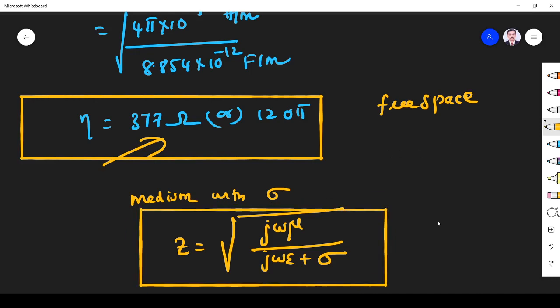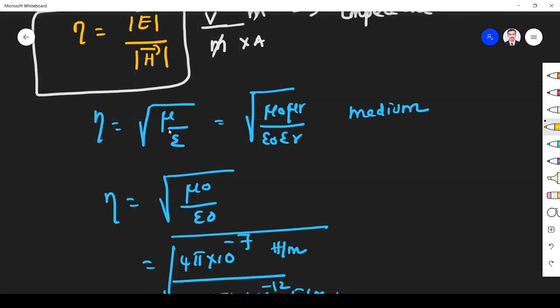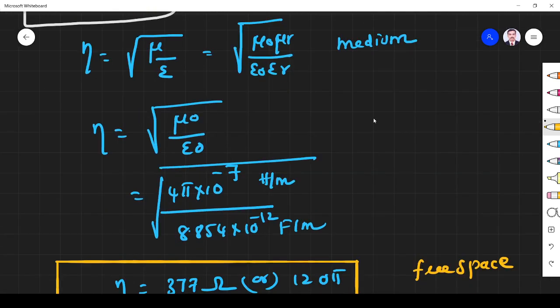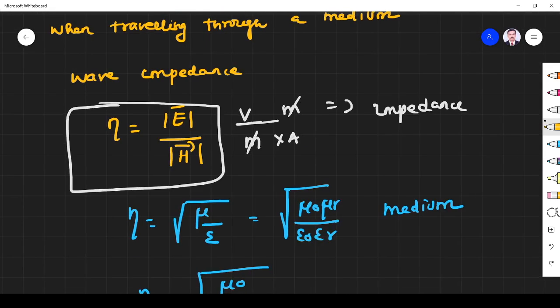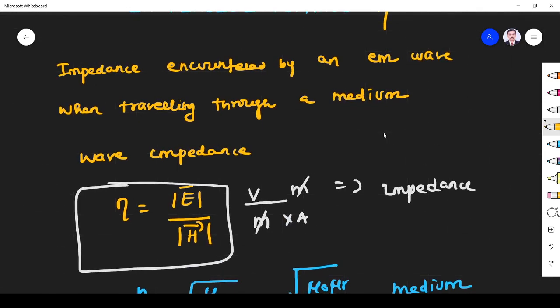We have three different kinds of definitions. For a medium with permeability and permittivity, eta is given by square root of mu by epsilon. For free space it is 120 pi or 377 ohm. In terms of electric field and magnetic field, it is given by E by H.